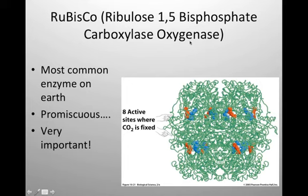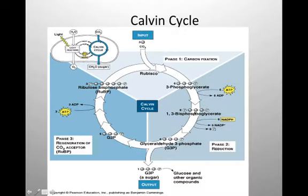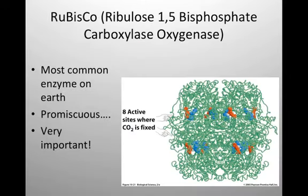It's called a carboxylase because it binds to carbon dioxide, and it's called oxygenase because it actually has the ability also to bind to oxygen. The crazy thing is that 8 active sites, this enzyme is so complex, 8 places for carbon dioxide to bind and to attach to RuBP. There's 8 sites where CO2 can be fixed onto the RuBP.